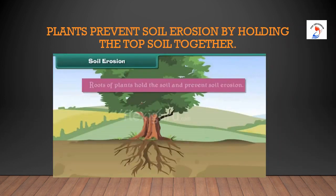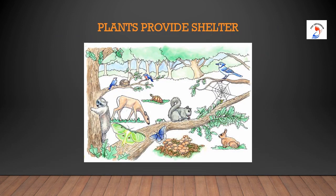Next, plants prevent soil erosion by holding the topsoil together. You can see in the picture how the roots are holding the soil. So roots of plants hold the soil and prevent soil erosion. Plants also provide shelter and shade to living beings. They are also homes to many animals, birds and insects.